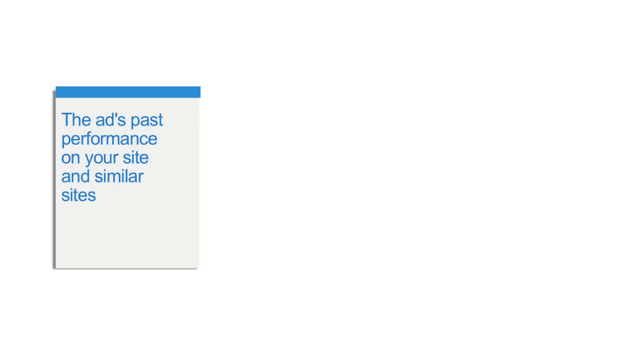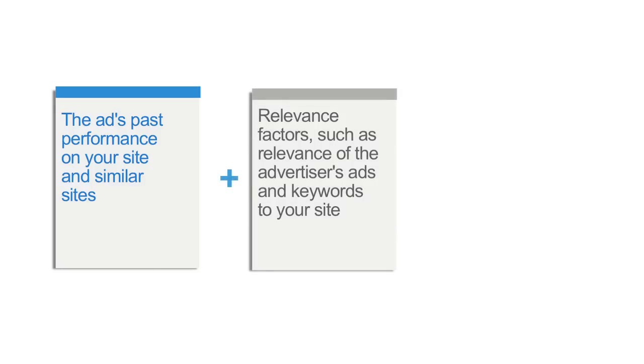Quality score represents an ad's expected user value and performance on a particular site, yours in this case. And it's made up of the following three components. One, the ad's past performance on your site and similar sites. Two, relevance factors such as the relevance of the advertiser's ad and the keywords to your site. And three, the advertiser's landing page quality. The ads are ranked in price according to their bid and their quality score.